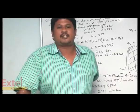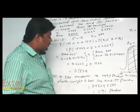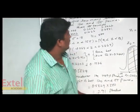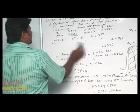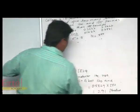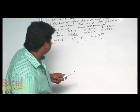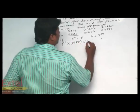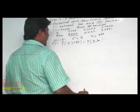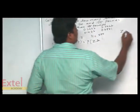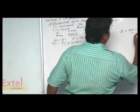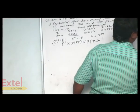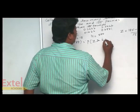This is the first part of the question. For the second question, we have to find out the number of students whose weight is more than 185 pounds. Therefore, let us find out z: z is equal to x minus mu, that is 185 minus 151 divided by sigma which is equal to 15. Therefore, we will have 34 by 15, which is equal to 2.2667.